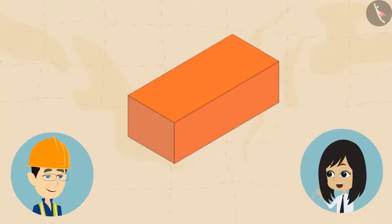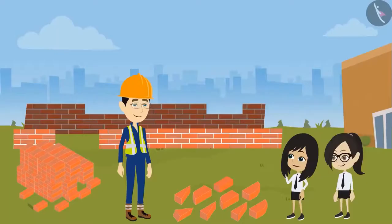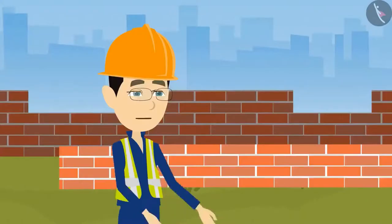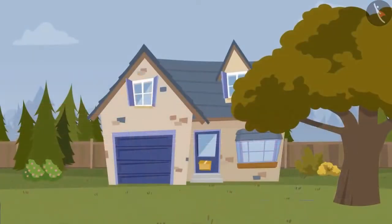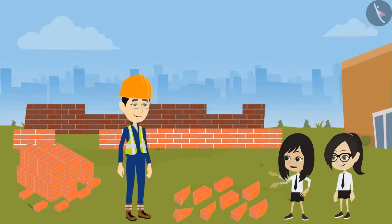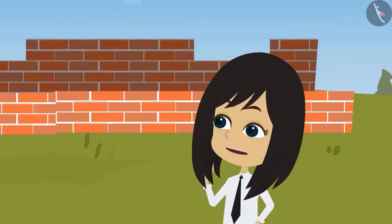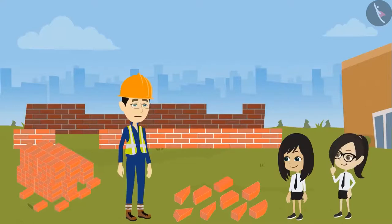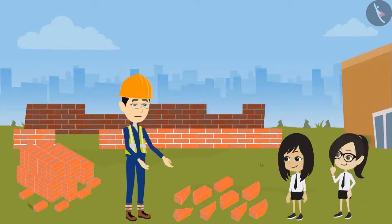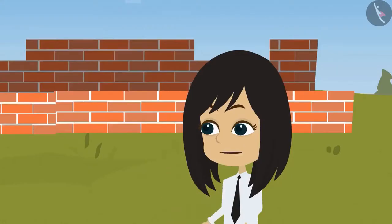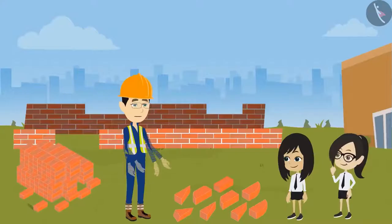That means bricks are only available in cuboid shape. Yes. Sir, my question is — you told us that our house is made up of bricks, but I can't see bricks anywhere in the house. Does that mean my house is built of some other material and not bricks? No, it's not like that. Your house is also made up of bricks. But you can't see them because after constructing the wall from bricks, the brick wall is covered with plaster. This gives the wall more strength and it lasts for many years. Are the walls of my house plastered? Yes, and they are painted too, to make them even more beautiful.